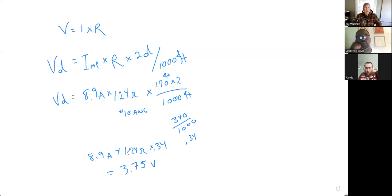Why is it volts? Because Ohm's Law tells us volts equals amps times resistance. So over that run, I'm going to lose 3.75 volts. Is that a problem? Well, what's the voltage of the system?